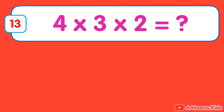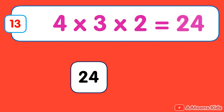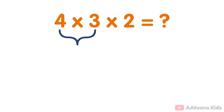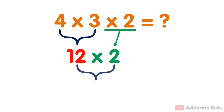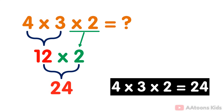4 multiplied by 3 multiplied by 2. The answer is 24. Simply multiply the numbers 4 and 3 which equals 12. Then you multiply the result 12 by 2. You will get 24. Therefore, the answer to 4 multiplied by 3 multiplied by 2 is 24.